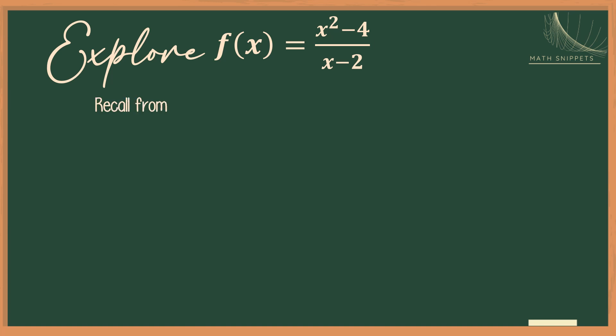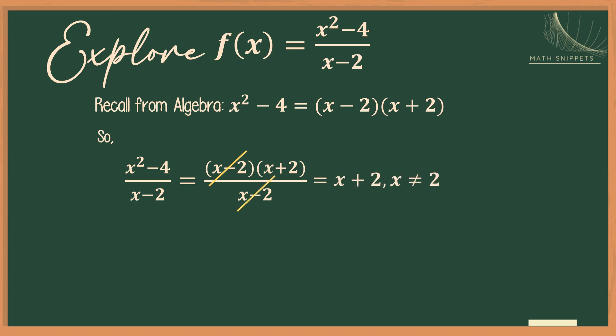Now we know that the numerator is a difference of two squares, x squared minus 4, and this can be factored into x minus 2 times x plus 2. Therefore, we can rewrite the function into factored form. And we will see that we have a common factor, which is x minus 2. This reduces the fraction into x plus 2, where x should not be equal to 2.